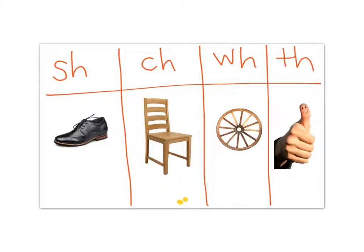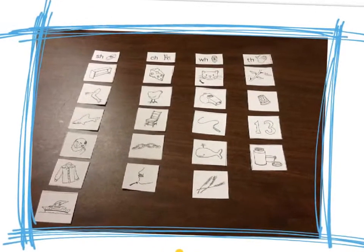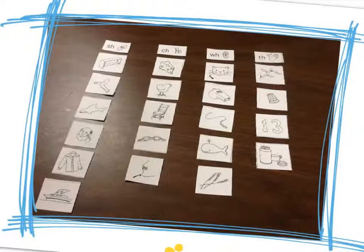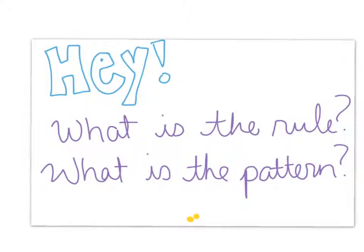Here are your headers. Copy them down in this order from left to right in your word study notebook: SH, CH, WH, and TH. Once you have your headers copied in this order, go ahead and sort your words. You can use this picture to check your sort — make sure you check each column, and you can pause the video if you need more time. Here's another version of the sort using words instead of pictures. You'll need to copy the correct words in your word study notebook in the correct columns. You can pause the video if you need more time. Now that you and your partner have your words copied, talk to each other. What do you think the rule is? What's the pattern?